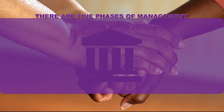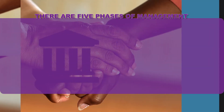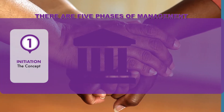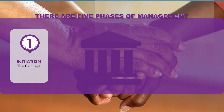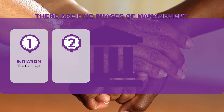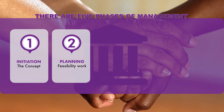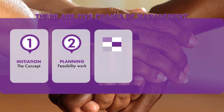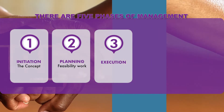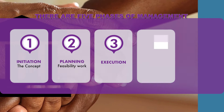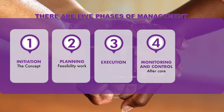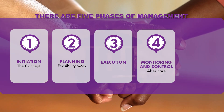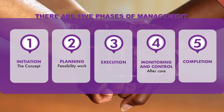There are five phases of management. These include: one, initiation, which is the concept; two, planning, which includes feasibility work; three, execution; four, monitoring and control, which also includes the aftercare; and five, completion.